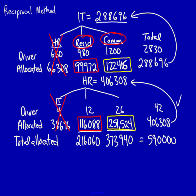Now, if I add in the direct costs from the actual departments, residential and commercial, I'm going to add in the 670,000 and I'm going to add in the 980,000.